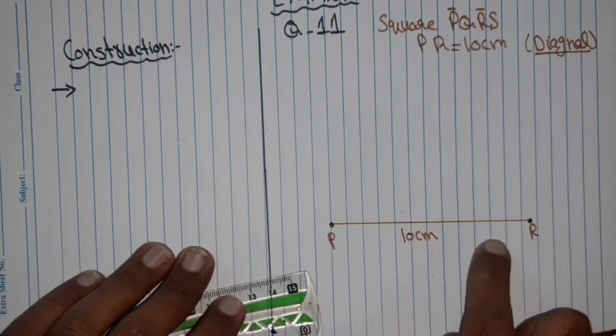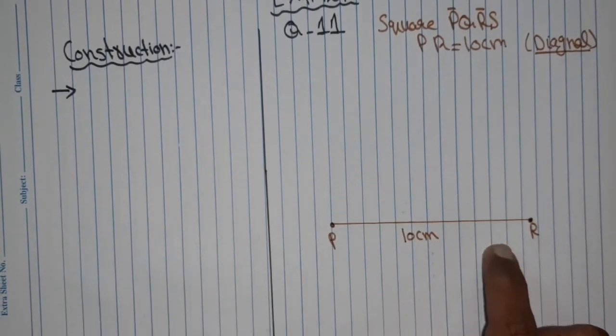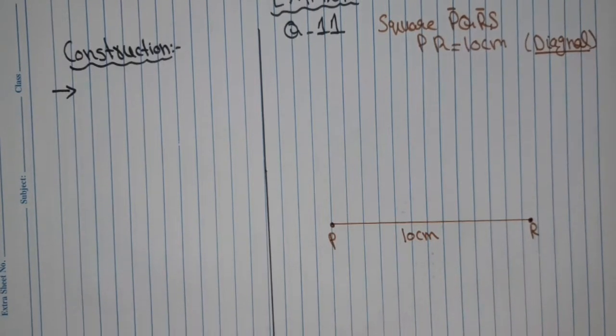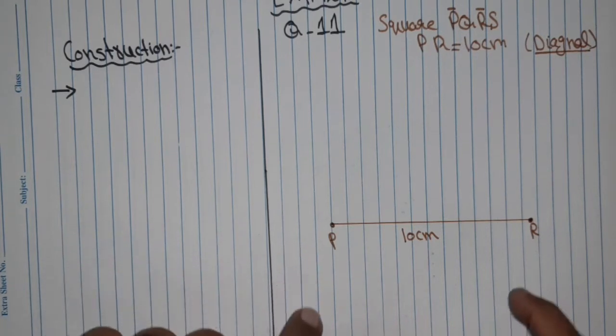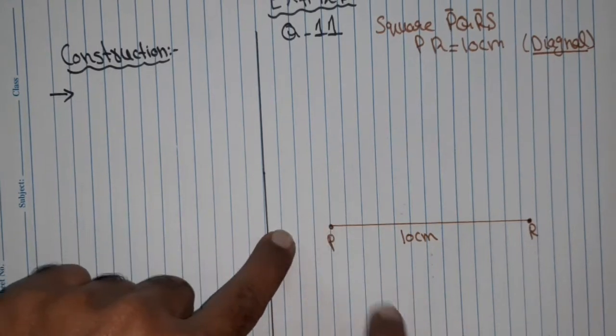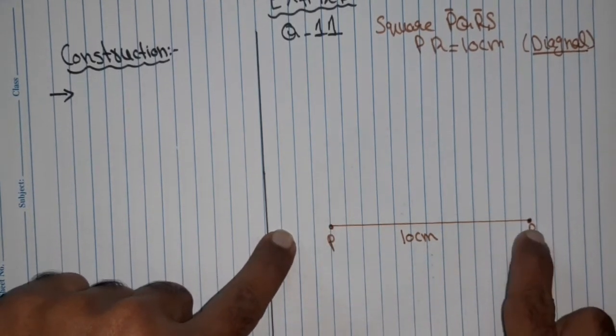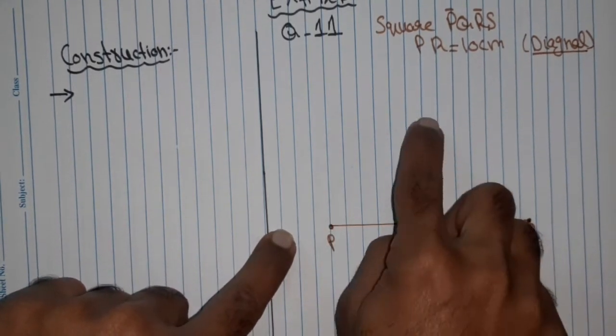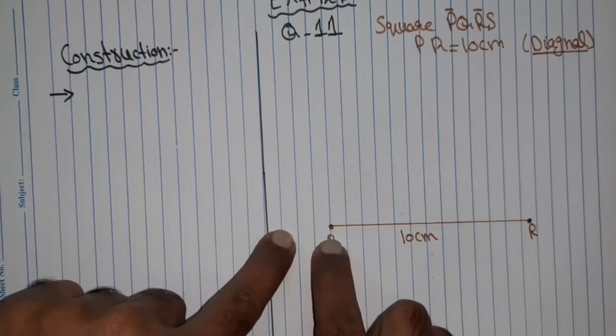We have to construct this square by constructing the perpendicular bisector of PR. As we know that if we draw a square, the PQ length, QR length, RS length, and PS length are same.